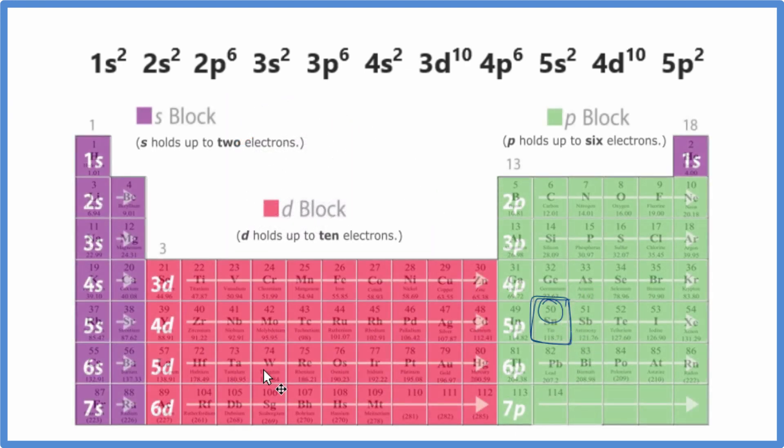So here's our Tin, and the periodic table is divided up into orbital blocks. We have the S block, D block, and P block. Tin is in the P block. If we want to look at the configuration, we see it's in the fifth row, the fifth period, 5P1, 5P2. So it should end with the configuration 5P2. It could go up to 5P6 here with six electrons, but Tin only has 50 total electrons, so it has to end in 5P2.